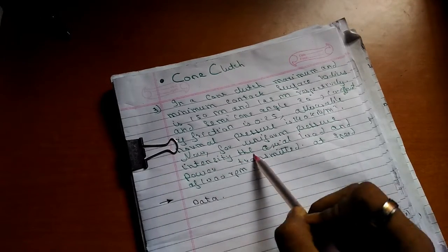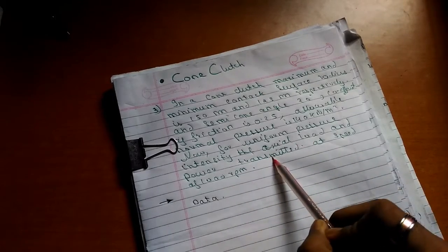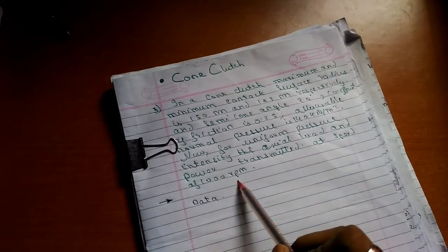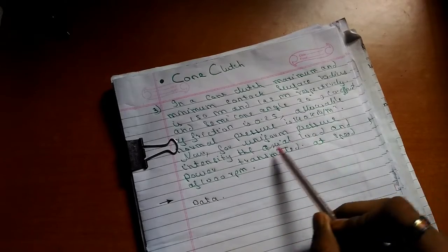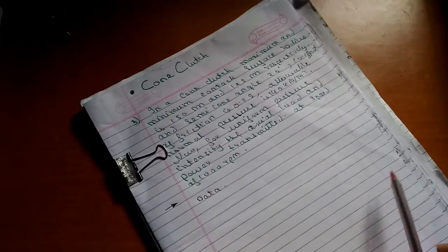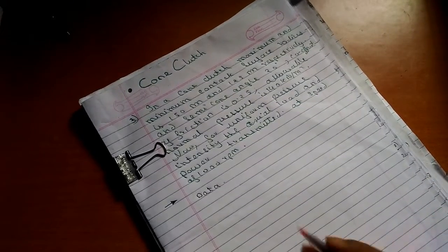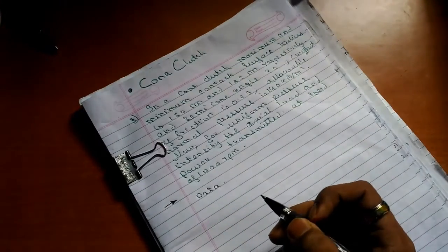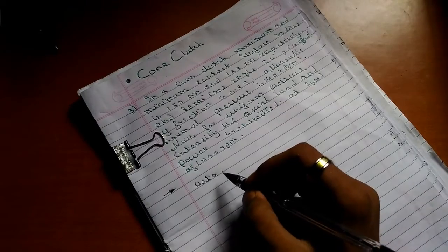Coefficient of friction is 0.25, allowable normal pressure is 140 kN per meter square. For uniform pressure intensity, we need to calculate the axial load and power transmitted at speed of 1000 rpm.